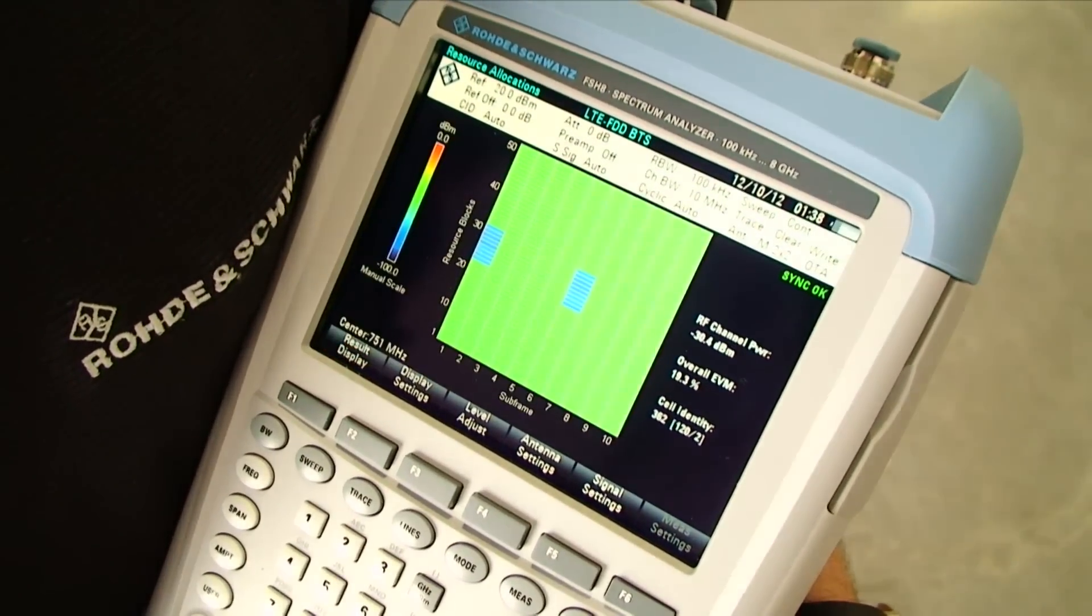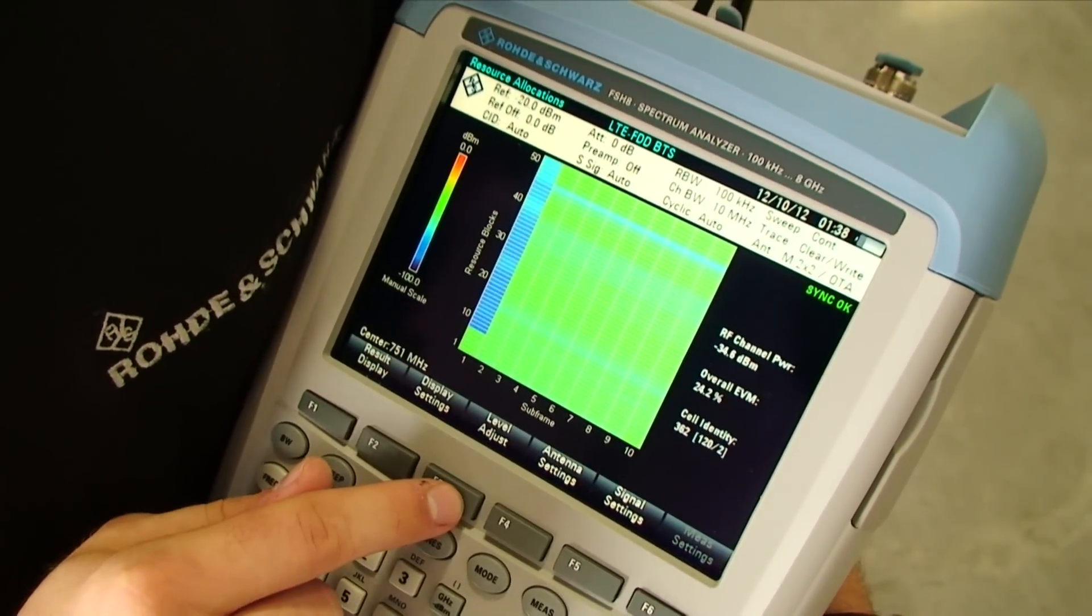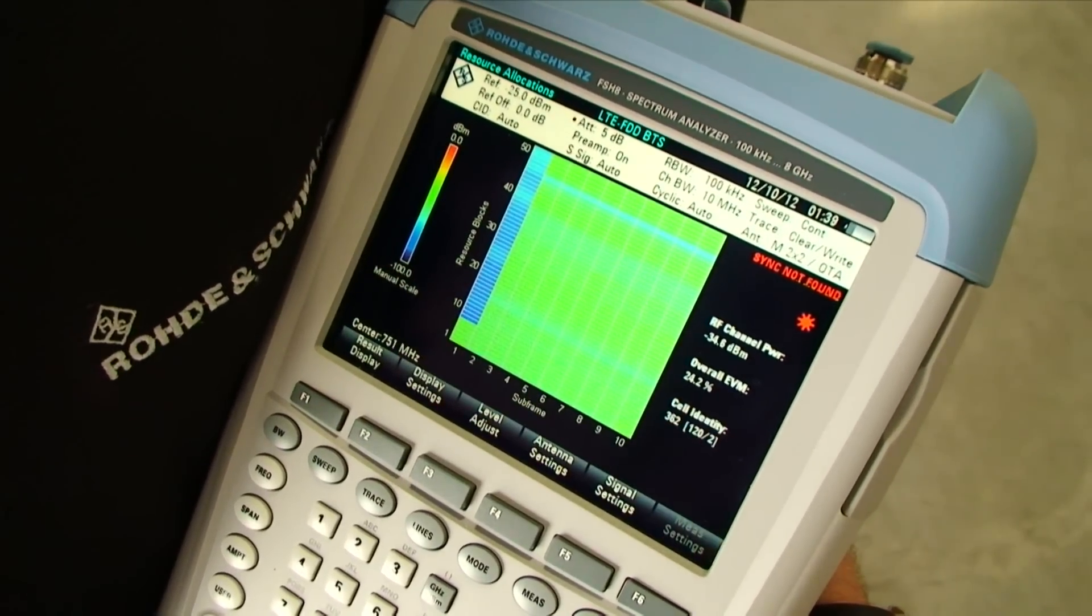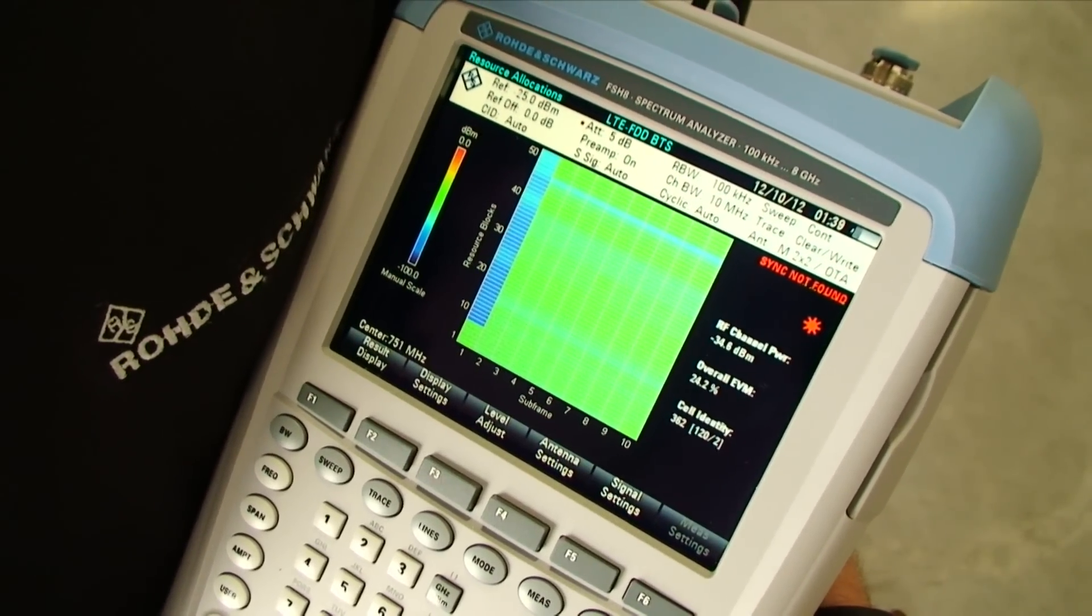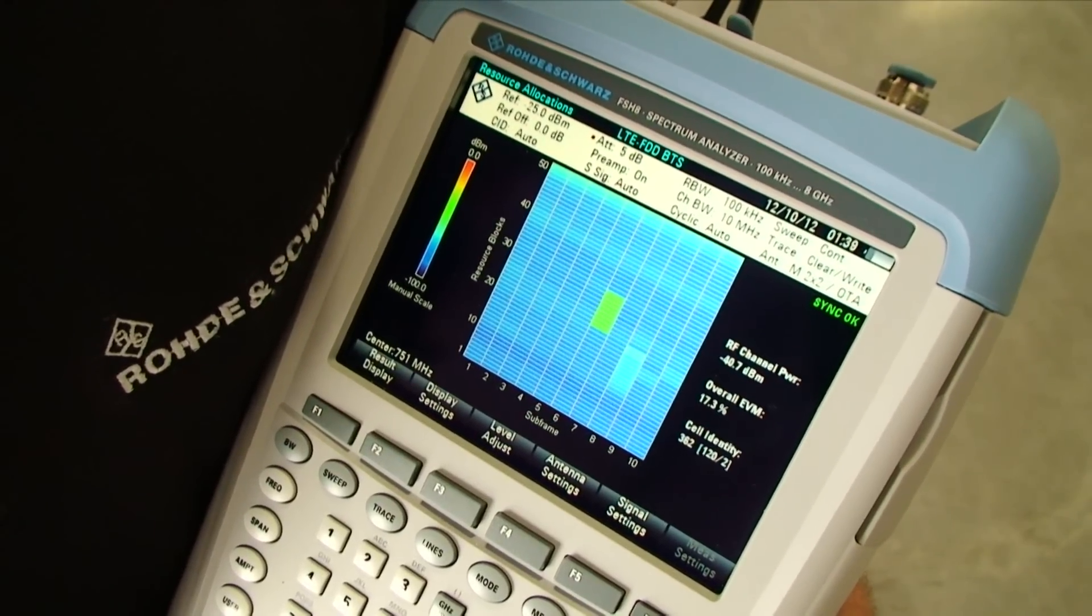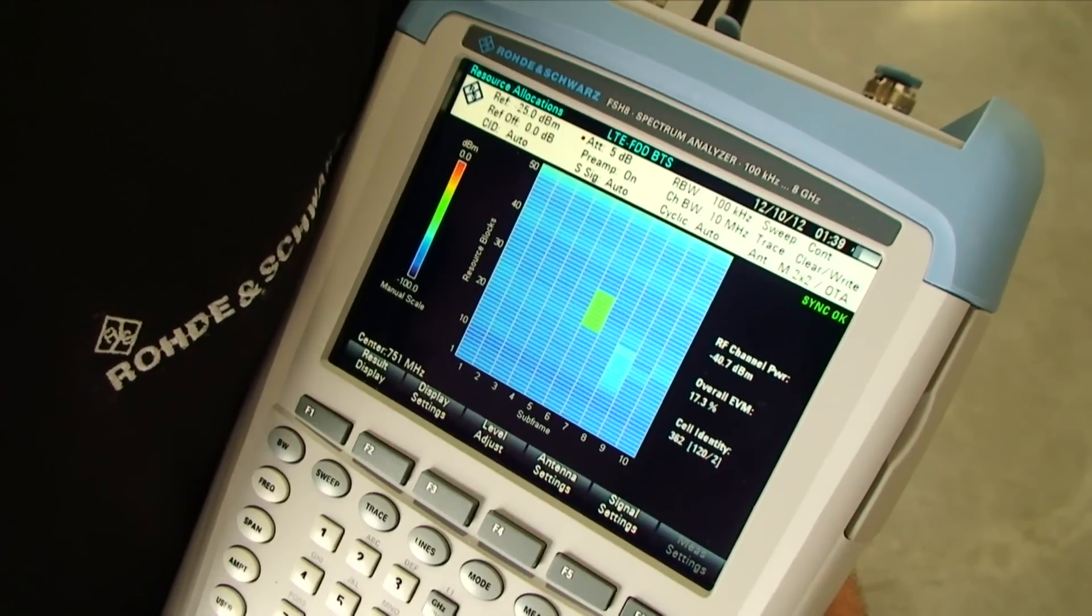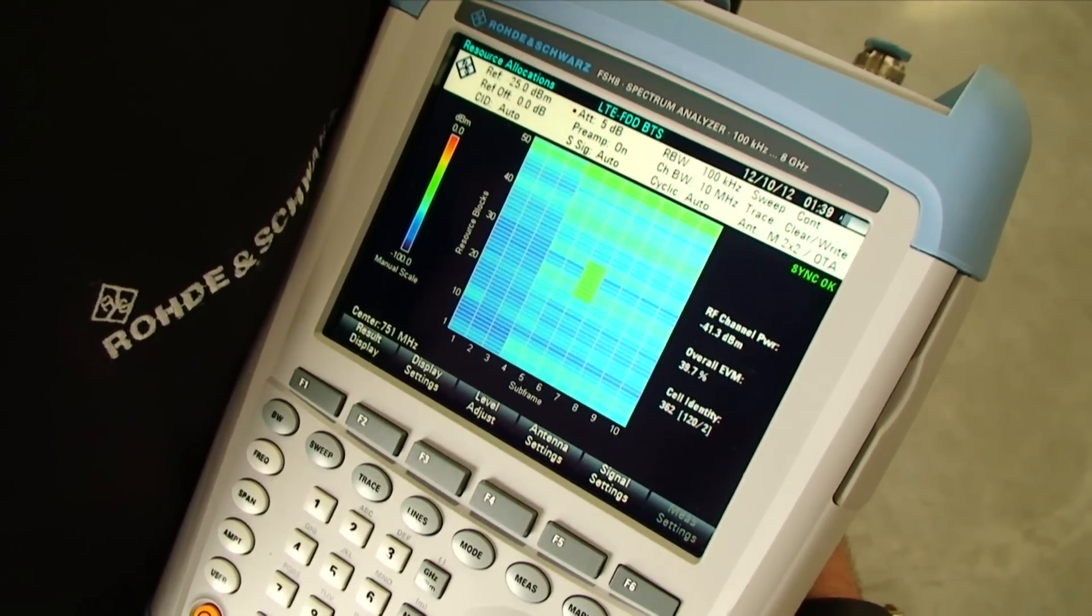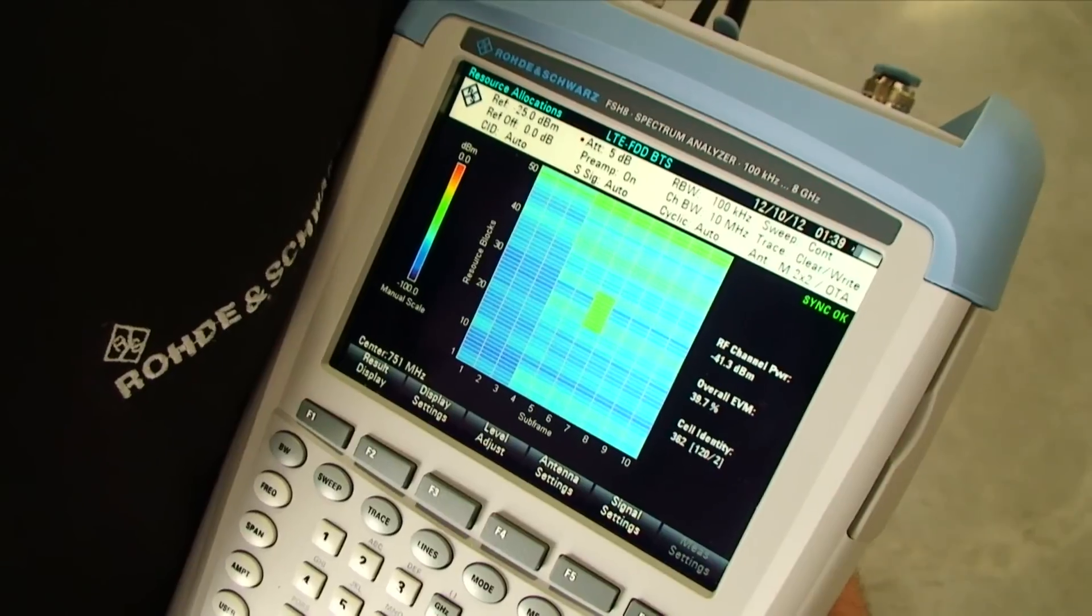Let's move to the resource allocations display. I'm going to go ahead and press level adjust here to massage the front end of the FSH. Now it's going to sync on to the base station again. Once it's completed that, this is going to be a display of the resource blocks across the 10 subframes used for the LTE signal. This is useful to see where the traffic is actually originating from.